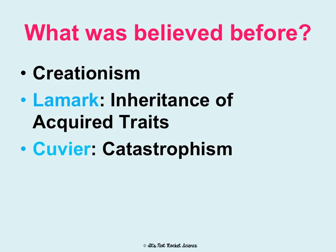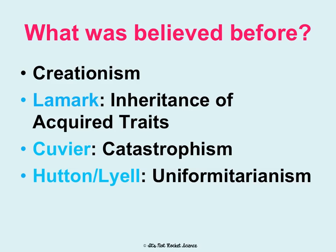Cuvier came up with a theory of catastrophism — the idea that drastic changes that have happened to Earth match geological changes. Hunt and Lyell were kind of the opposite of that. Theirs was the idea of uniformitarianism: everything is gradual and connected, changing slowly over time through slow, gradual changes to environments.